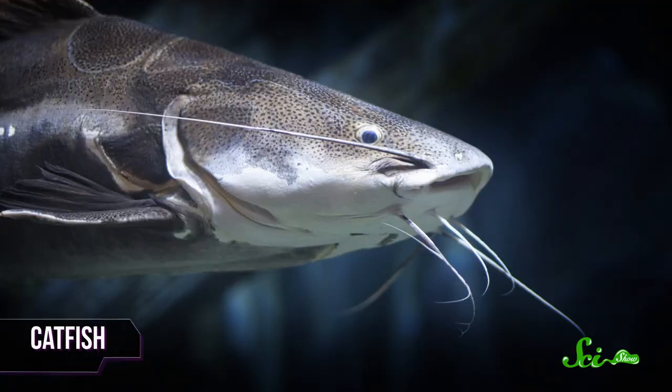Electroreceptivity has evolved over and over again, totally independently, in a global act of convergent evolution. Animals that live and hunt in murky water where they might not be able to see or hear very well gain an advantage if they can feel their surroundings through special electroreceptive cells in their skin.